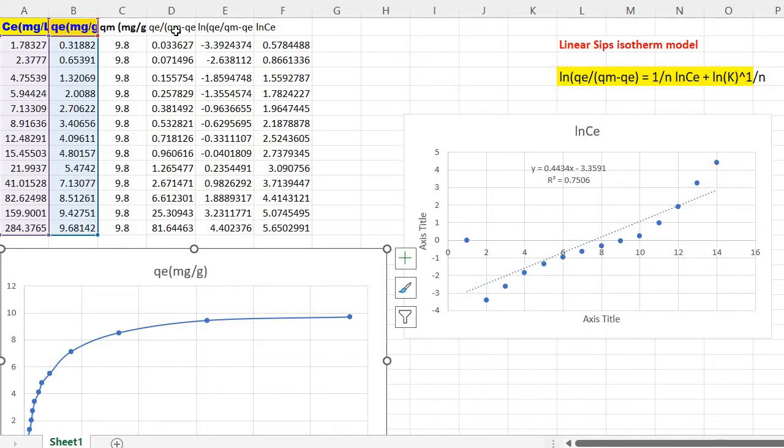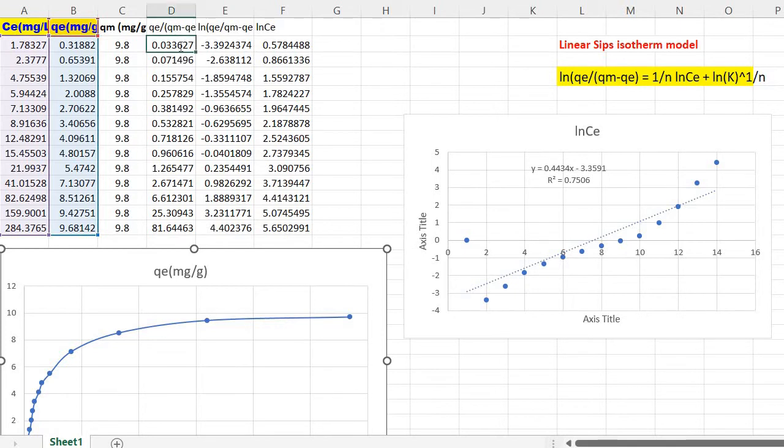Then you need to calculate QE divided by QM minus QE. Just write equal to, then click on this. Click on this B2, QE divided by bracket C2 minus B2, then bracket, then click enter and scroll down this.